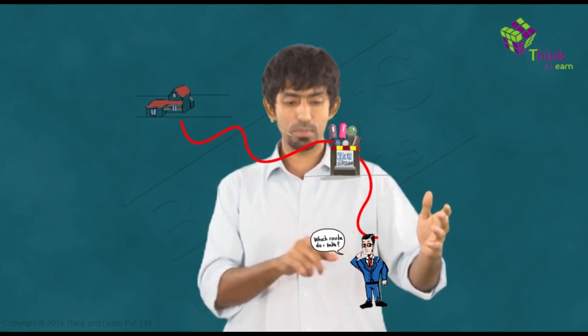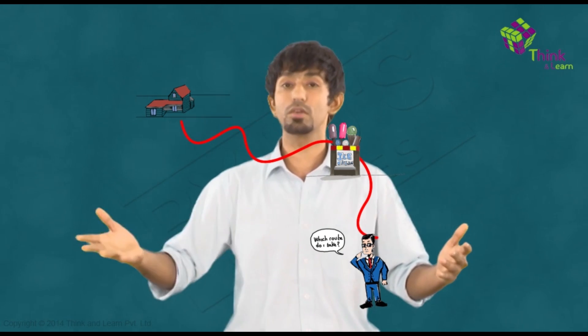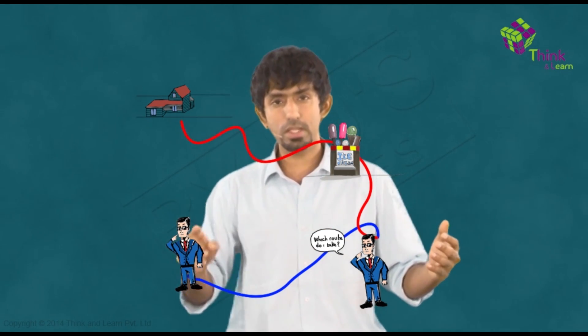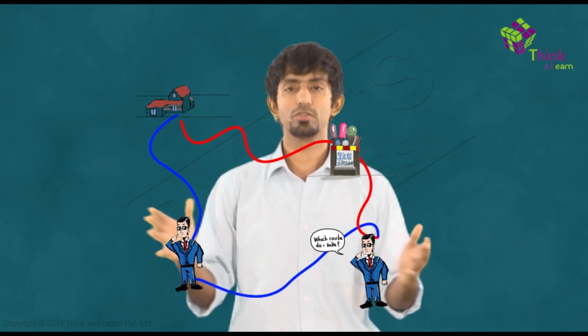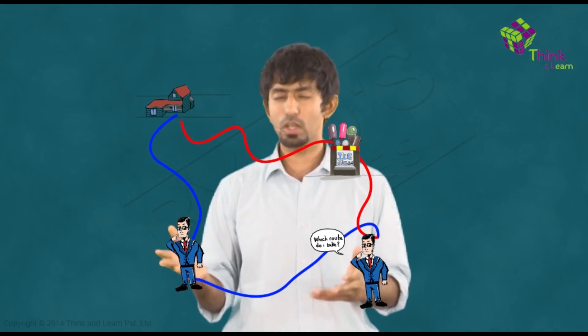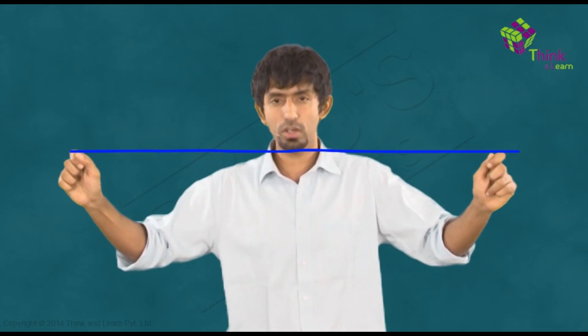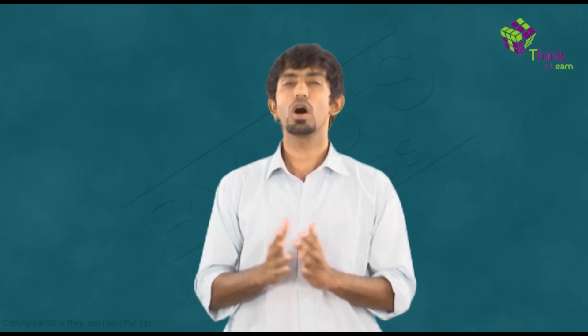Is that the only path you could have taken? Of course not. Let's say you want to pick up a third friend and then go to that house — so you go down somewhere, pick your friend up, and then go up and reach your friend's house. In this case you obviously covered a different distance. So how many such distances are possible? Infinitely many, assuming there are enough roads. You could take any number of paths, and all of those correspond to different distances.